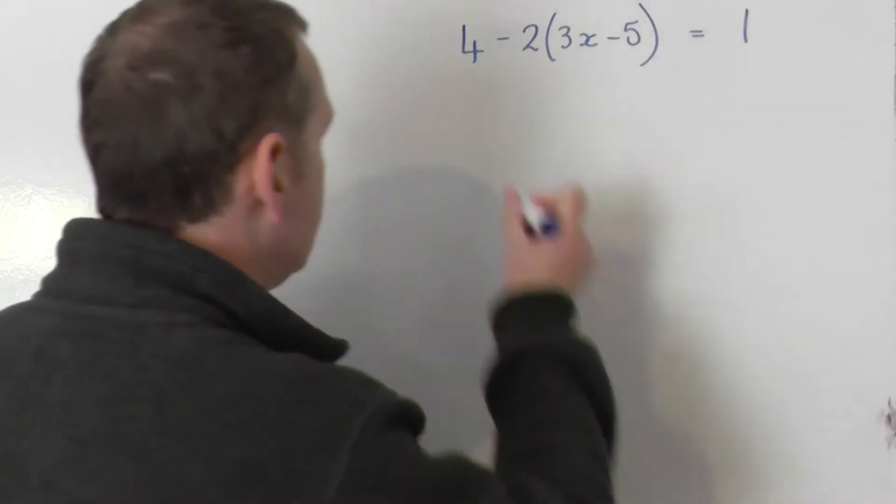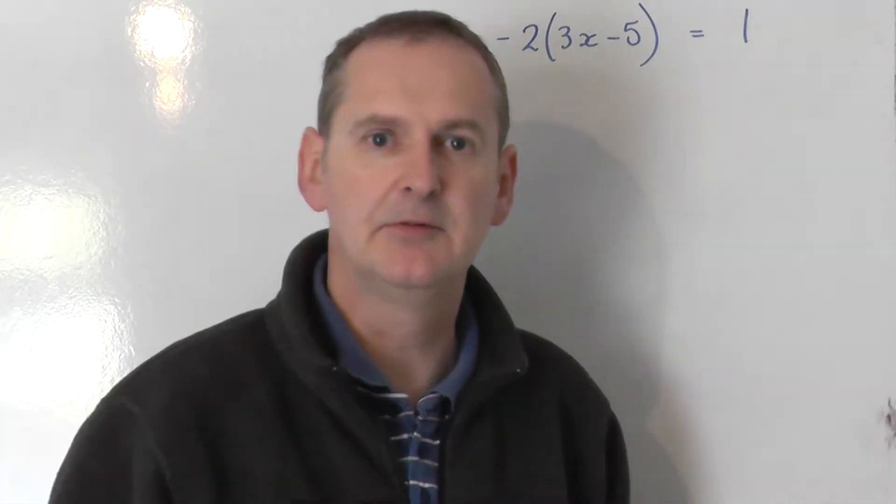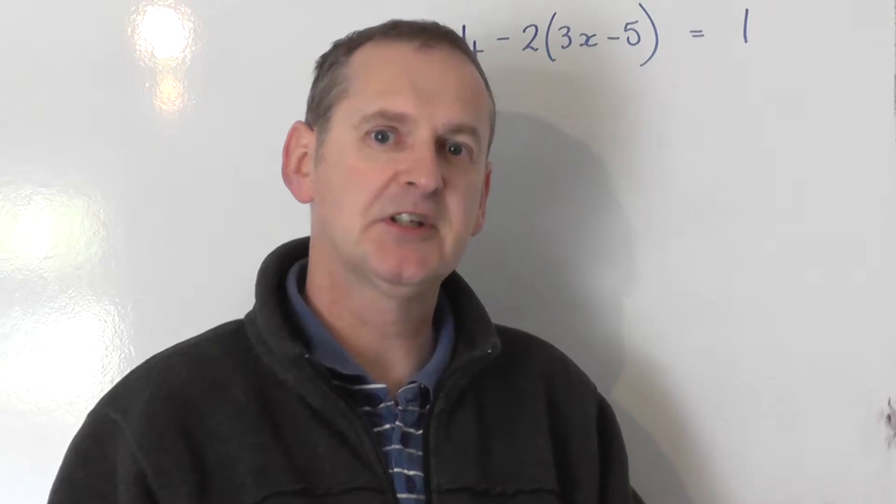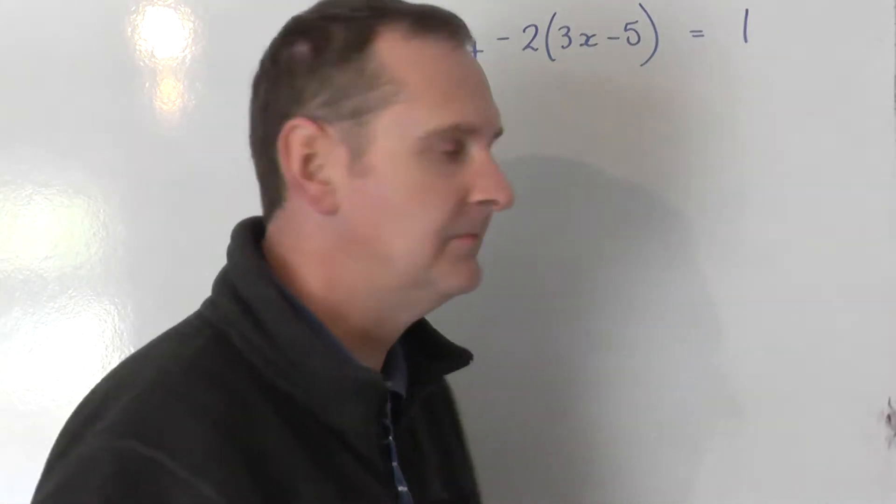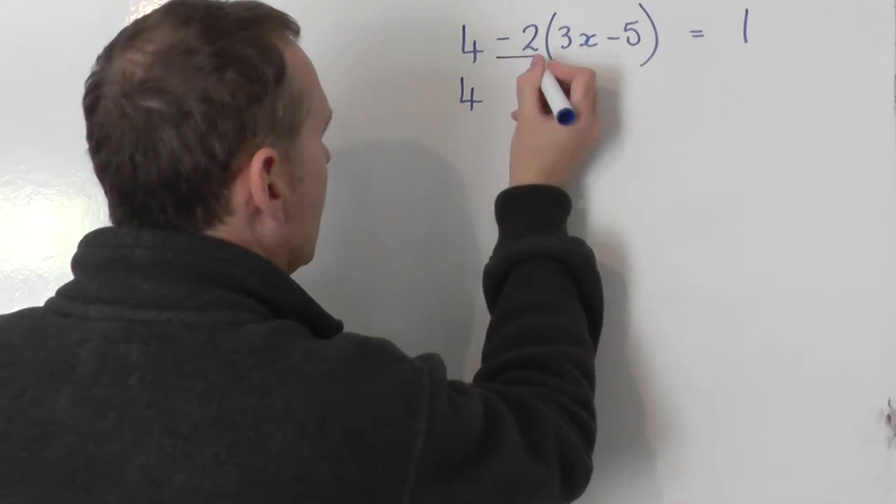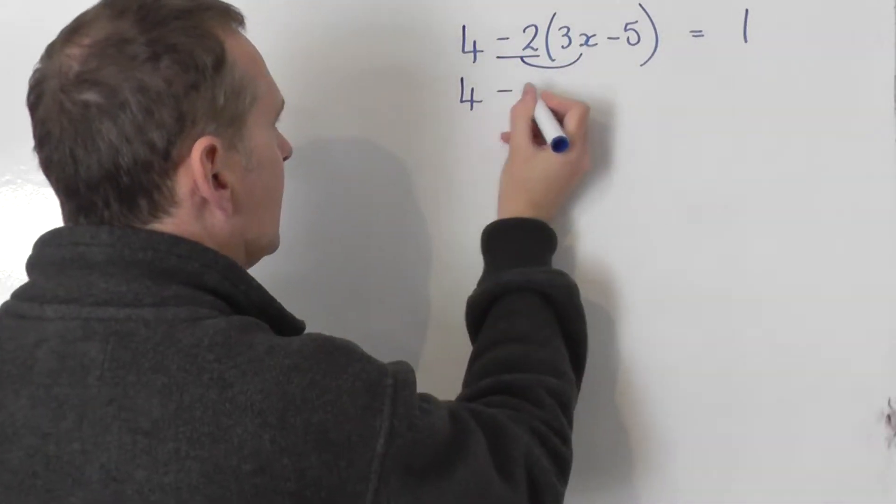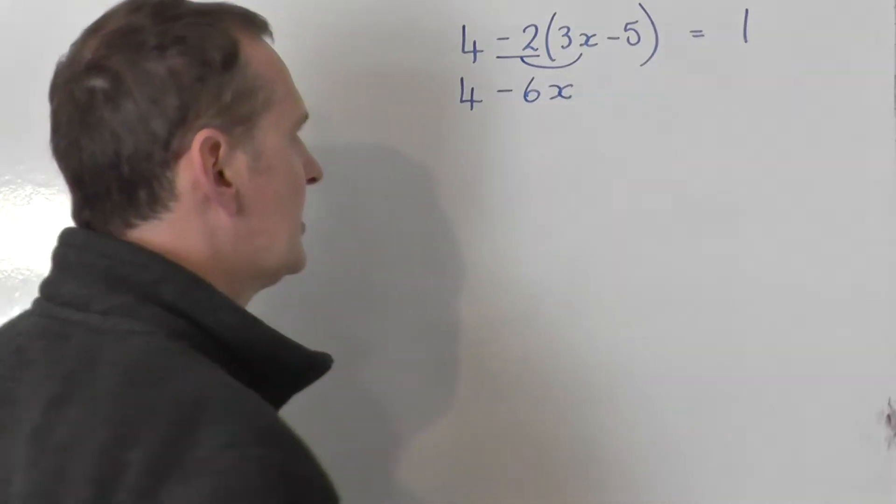So the first thing I would do is just immediately write the 4 straight down. And then what I'm going to do is expand out the 2 in front of the bracket. But be careful. I suggest you say minus 2 times 3x and that gives you a negative 6x.